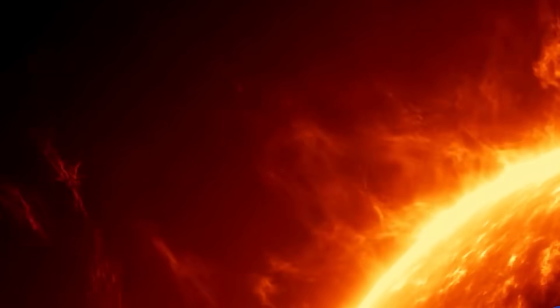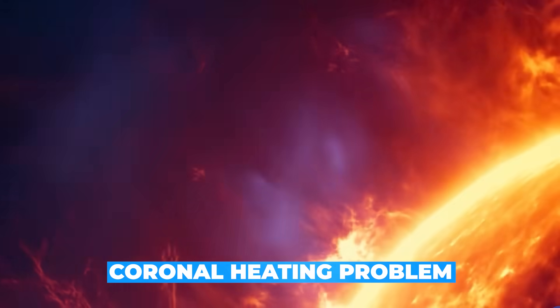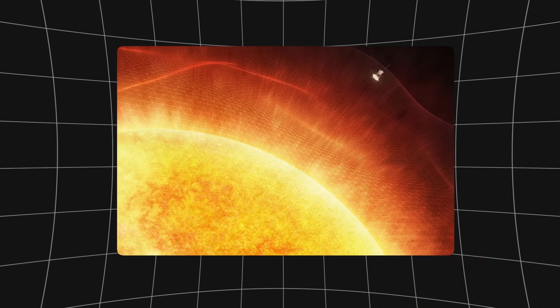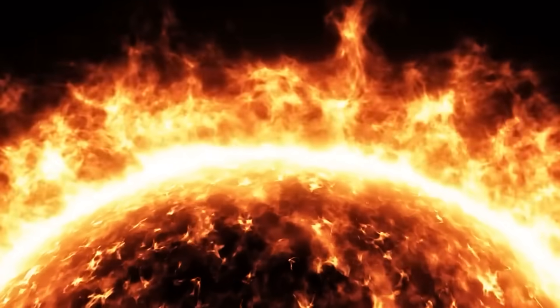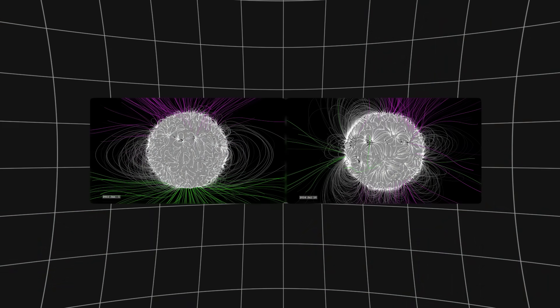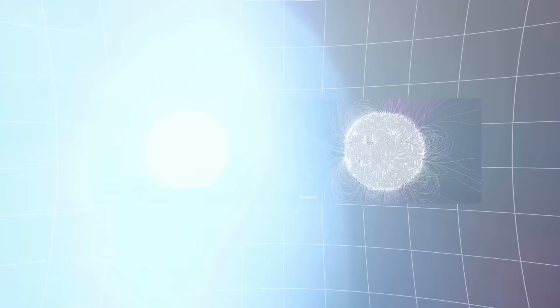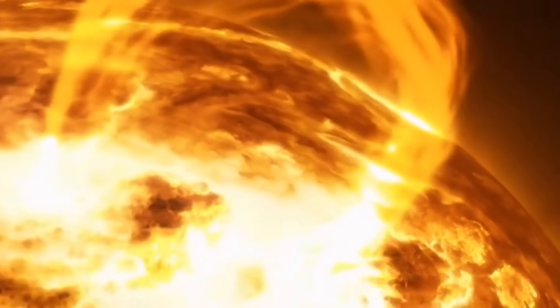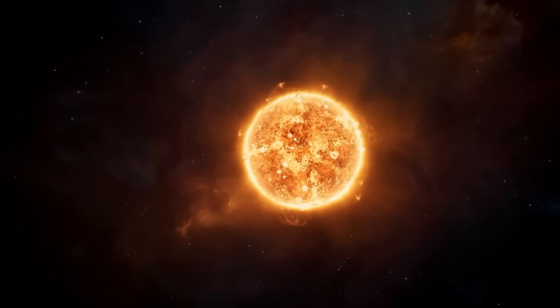One of its primary objectives was to investigate the coronal heating problem, the puzzling fact that the sun's outer atmosphere, the corona, is millions of degrees hotter than its surface. Scientists have long theorized that magnetic waves or hidden energy bursts might be responsible, but no direct evidence had ever been captured.